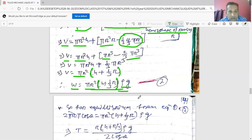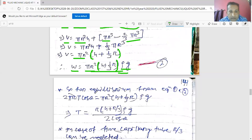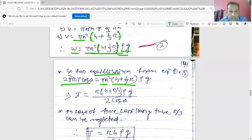Now for equilibrium, from equation 1 and 2, 2πr into T cos θ equals πr² into (h plus 1/3 r) ρg. So by simplifying, we will get T equals r into (h plus r/3) ρg divided by 2 cos θ.